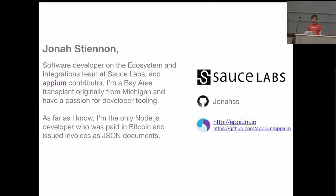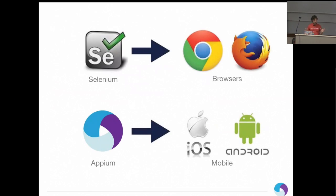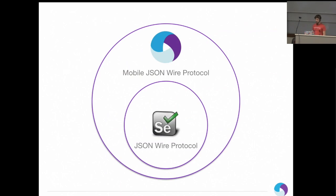We also employ a couple of developers who work on Appium, which is an open source test framework for controlling mobile iOS and Android devices. Who here is familiar with Selenium? That's pretty much everybody. So Selenium is to browsers what Appium is to mobile. They actually use the exact same protocol — Selenium is driven by the JSON wire protocol.